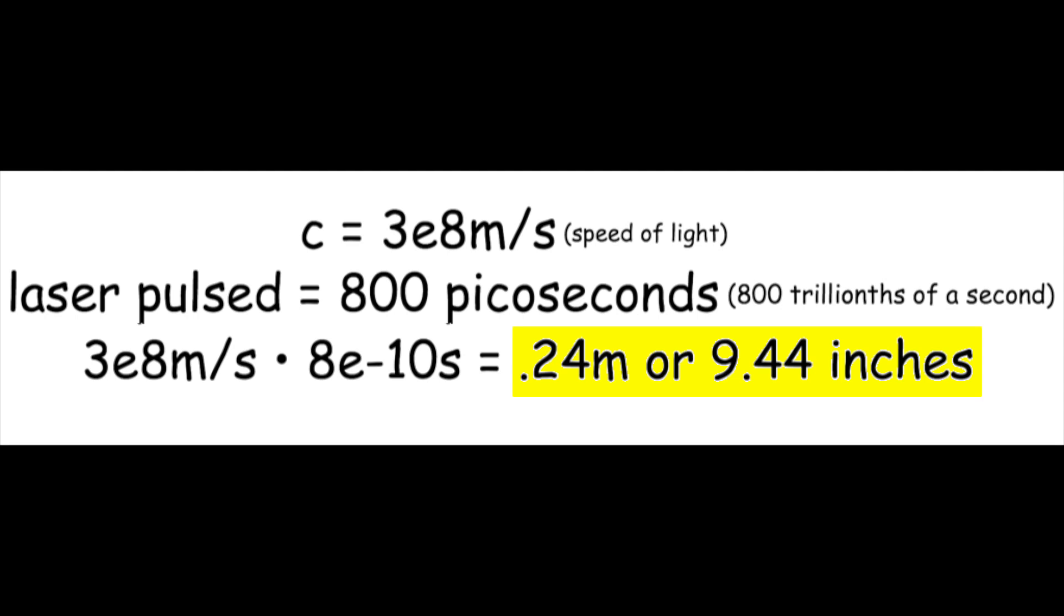The lower laser level of nitrogen also has a longer life than its upper laser level, which means nitrogen gas absorbs its laser radiation once the lower laser level becomes populated. For these reasons, it's of little use to build a TEA nitrogen laser with an active length greater than nine and a half inches long.